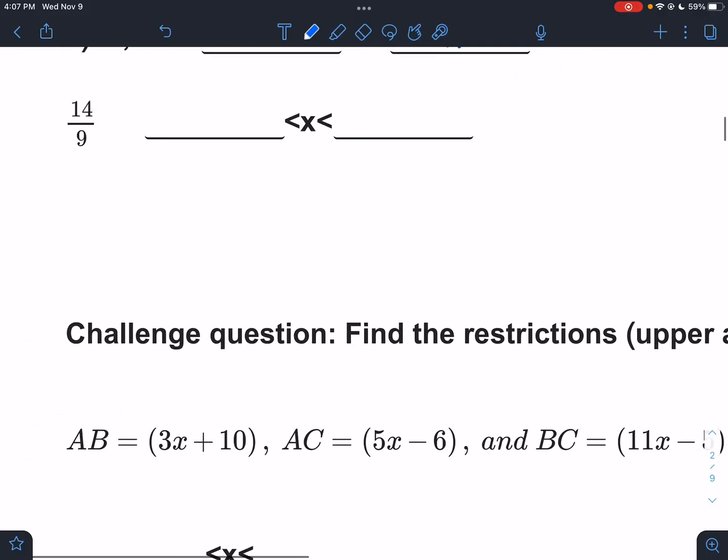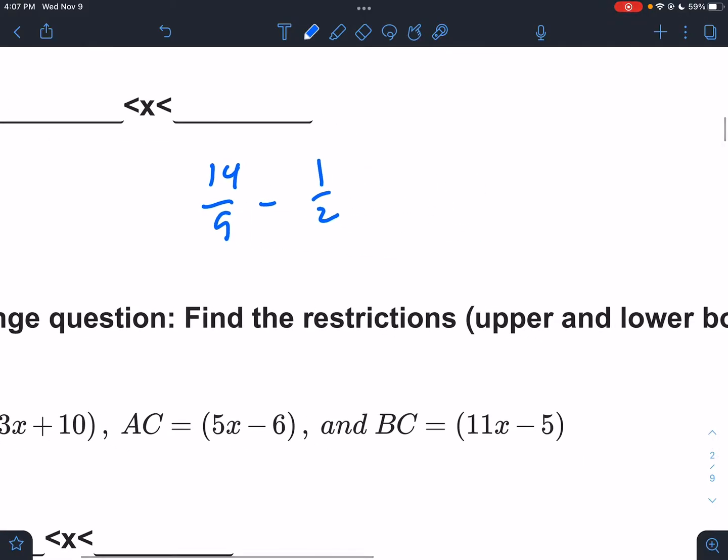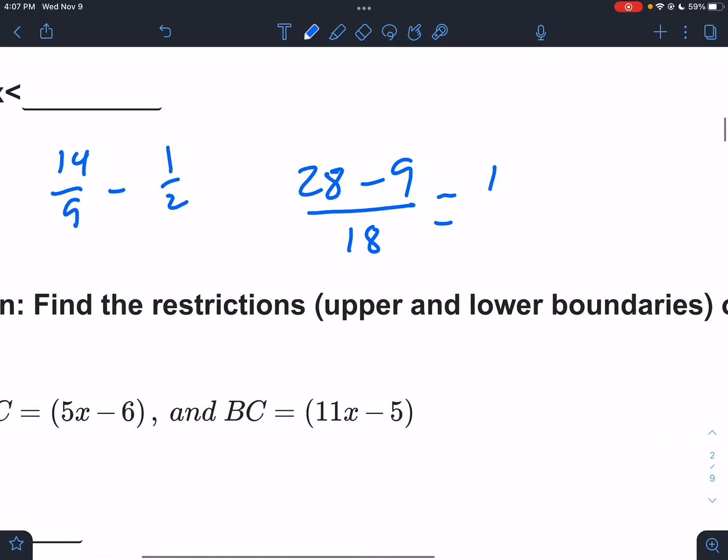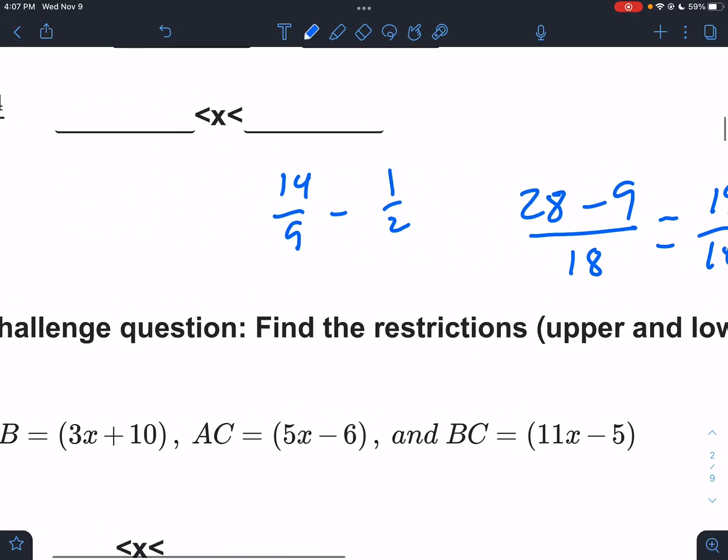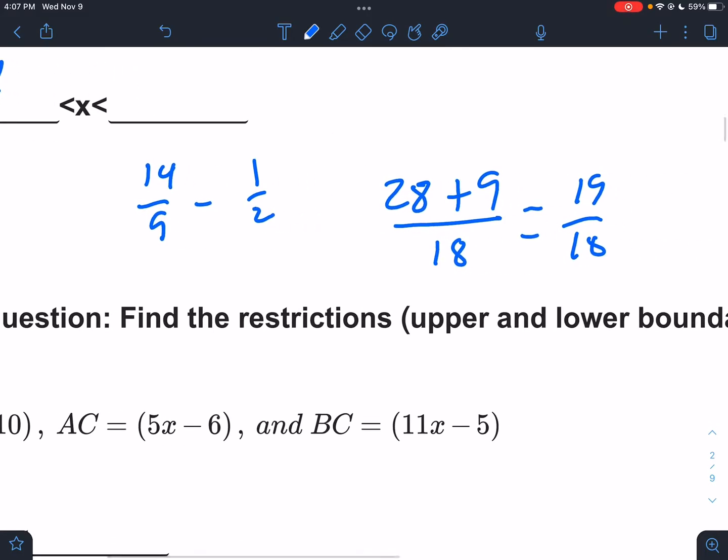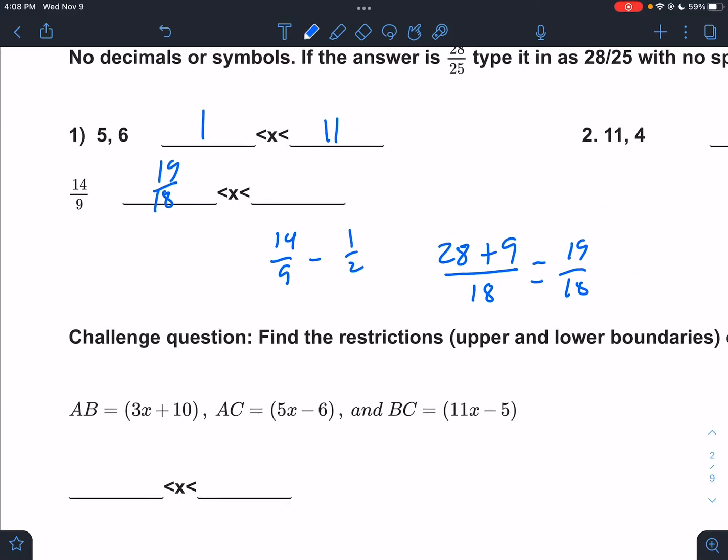One half and 14 ninths. So 14 ninths minus one half, make a big fraction, common denominator is 18. 9 times 2, so 14 times 2, 2 times 9, so 1 times 9. 28 minus 9 is 19 over 18.